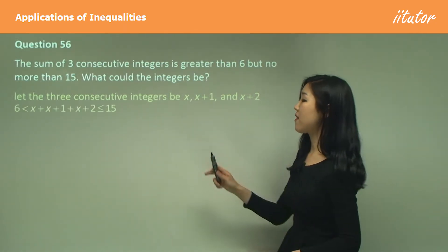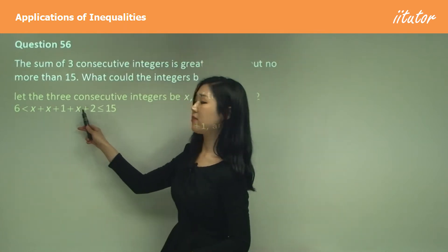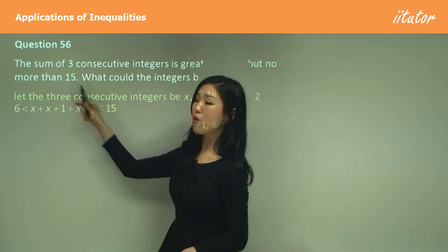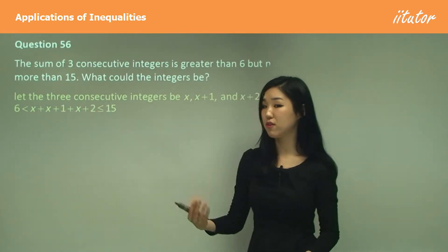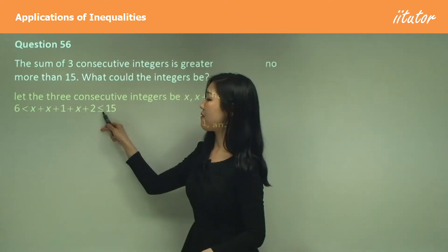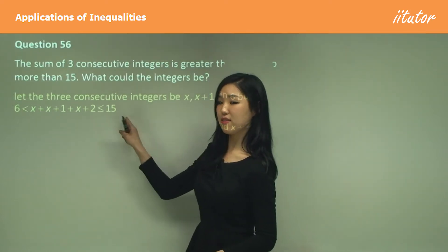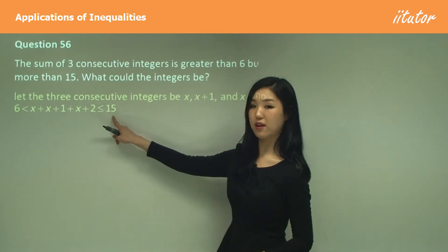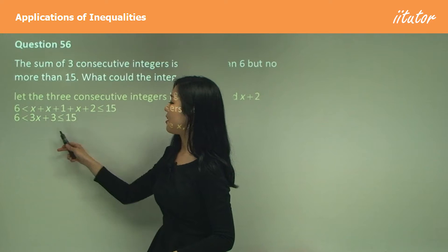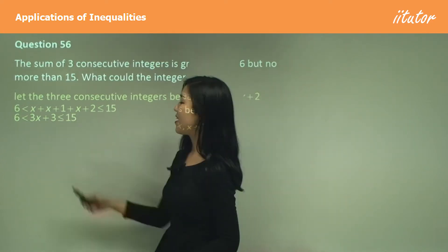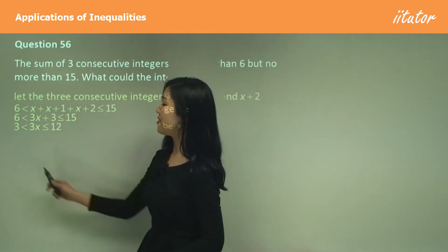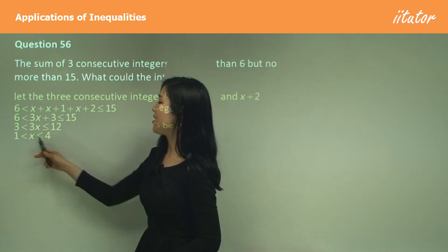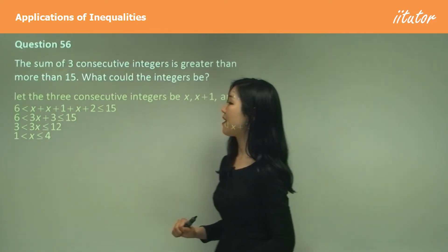The sum x + (x+1) + (x+2) is greater than 6 but less than or equal to 15 — note the 'no more than 15' means we include 15. Simplifying: 3x + 3 is between 6 and 15. Subtracting 3 gives 3 and 12, then dividing by 3 gives 1 < x ≤ 4.